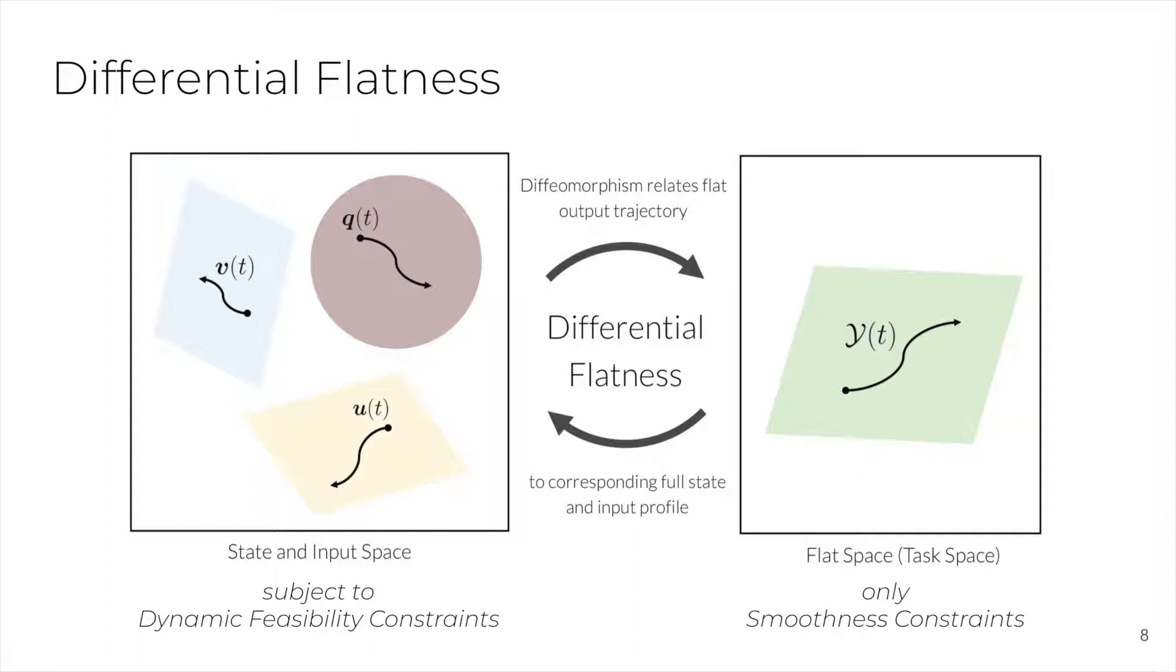We will now use the property of differential flatness to plan dynamically feasible trajectories for the system. Differential flatness establishes a bijection between trajectories in the state input space subject to dynamics and trajectories in another lower-dimensional space subject only to a smoothness requirement. This means that we can take any smooth trajectory in the flat space and immediately map it to the corresponding state profile and open-loop inputs that will nominally achieve that trajectory.